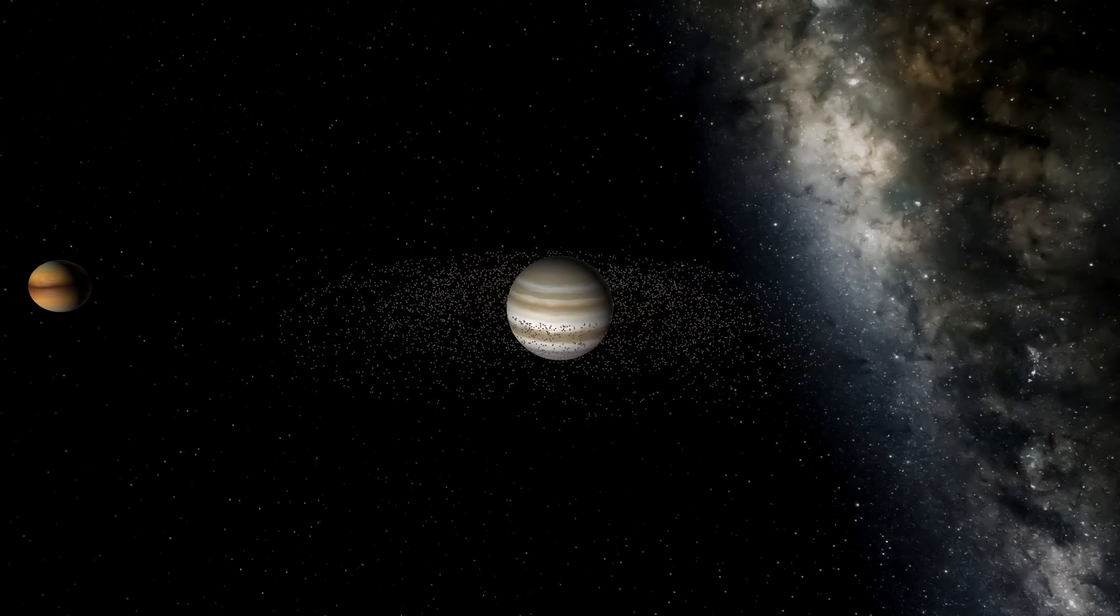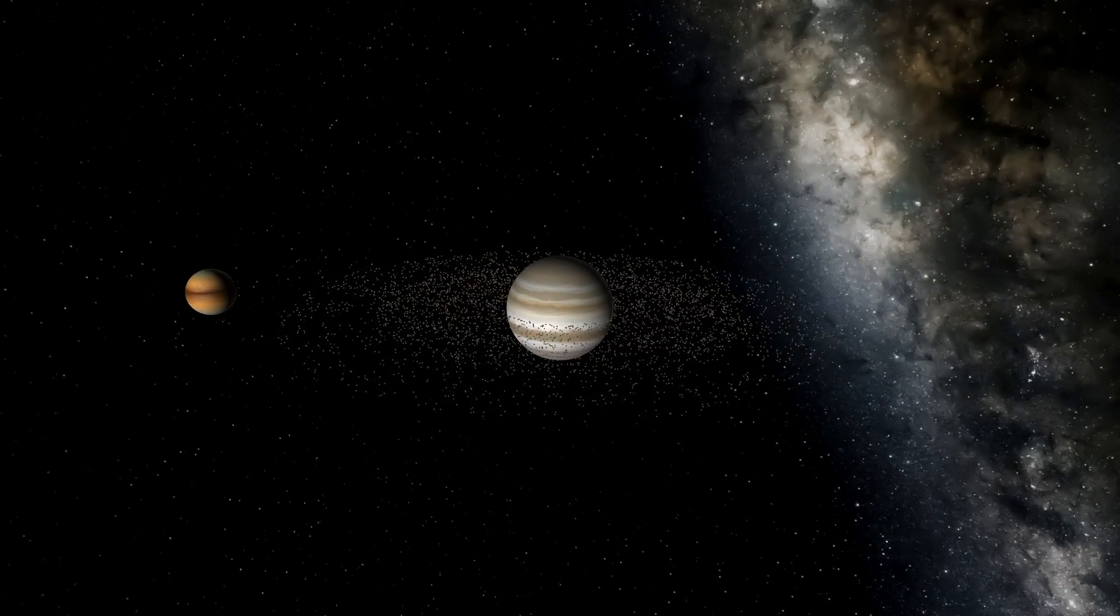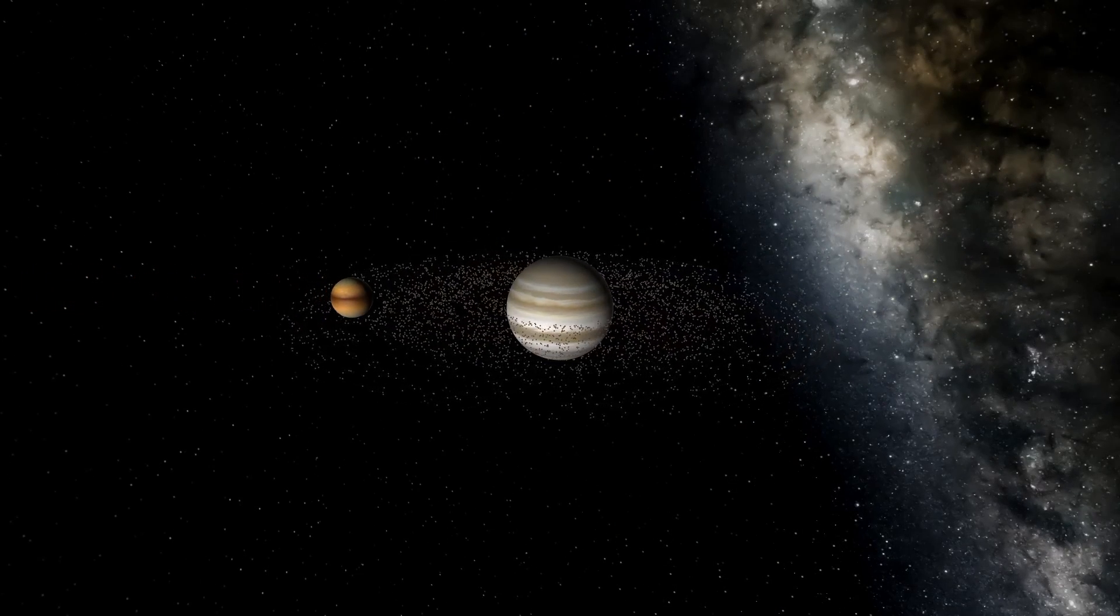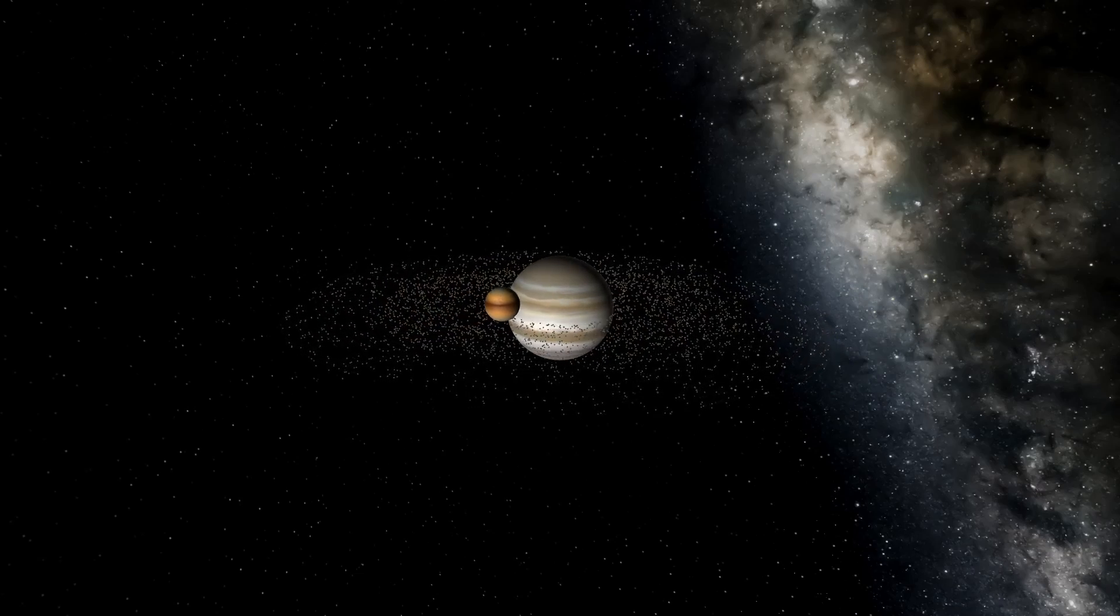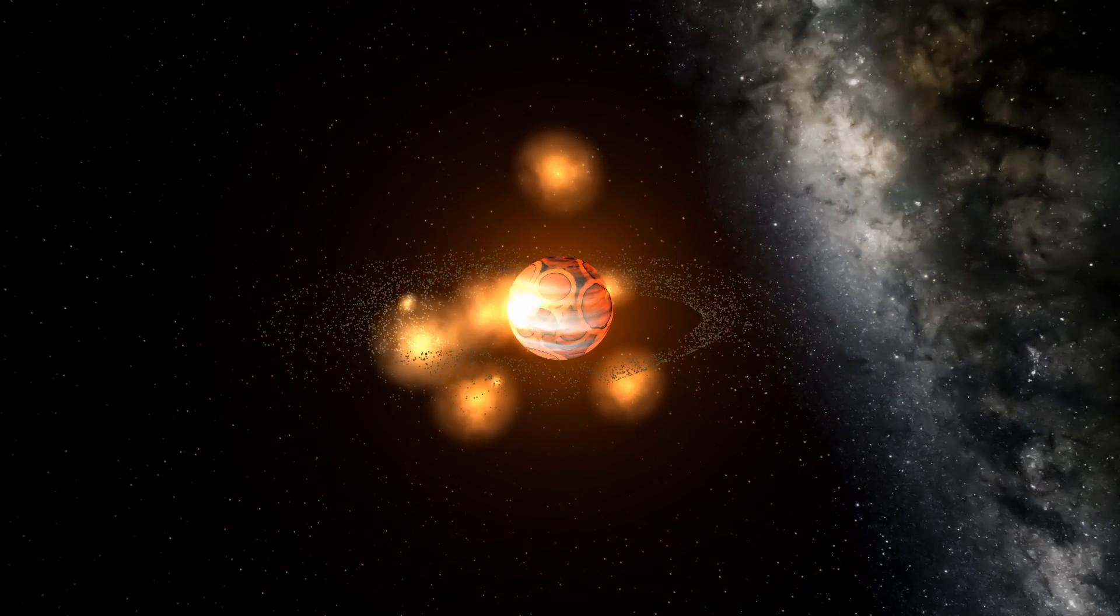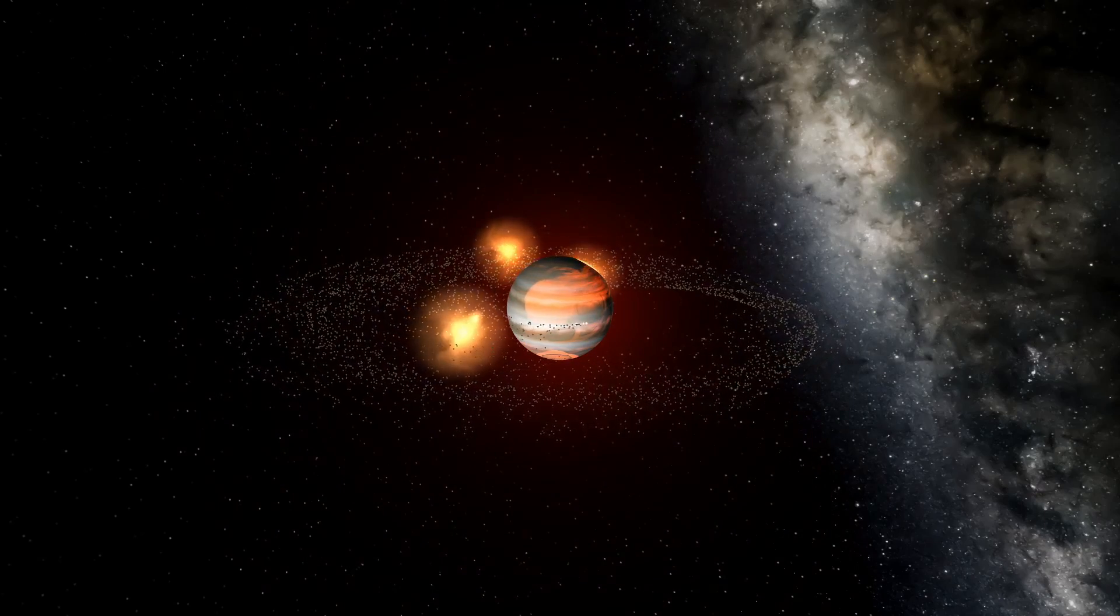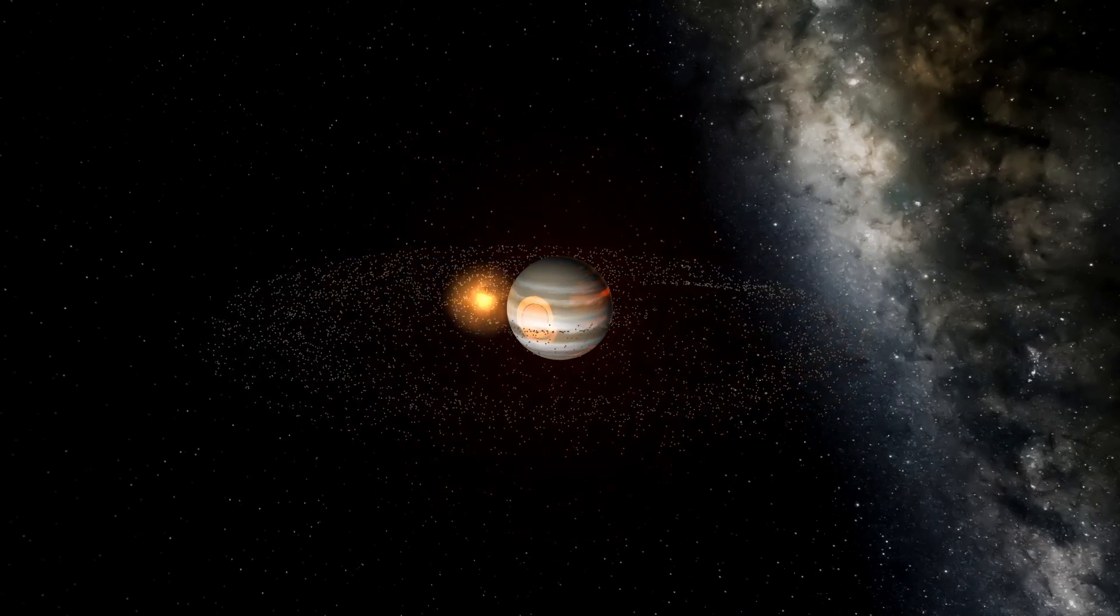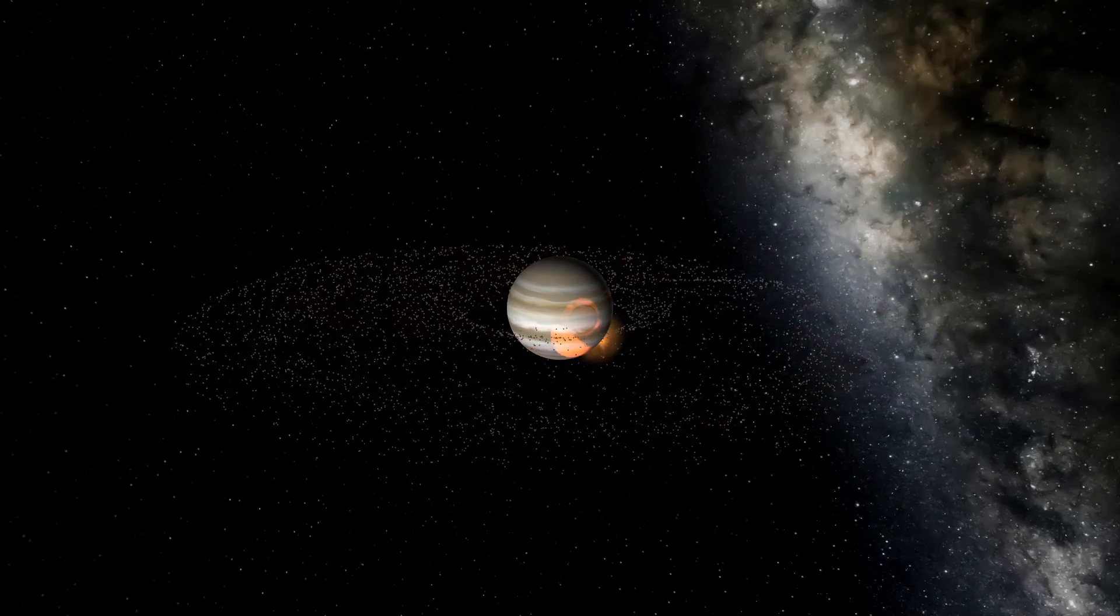This process continued, all while Jupiter was gaining more and more mass from the disk. At one point, colliding with a ten-Earth-mass protoplanet, which disrupted the composition of Jupiter's core. It eventually reached a distance of roughly 1.5 astronomical units, a present-day orbit of Mars.